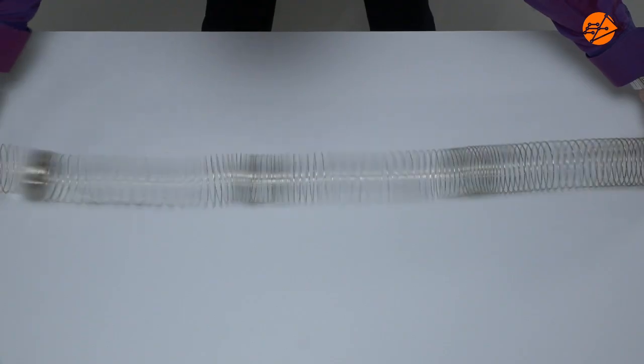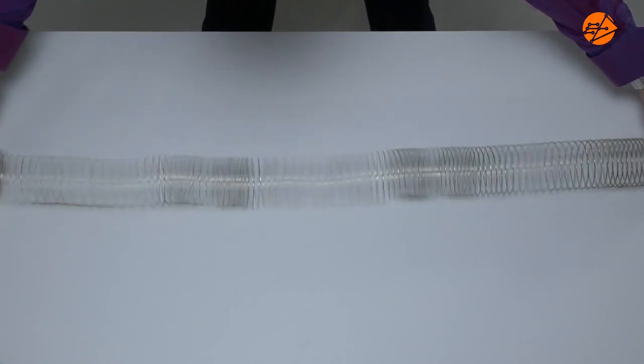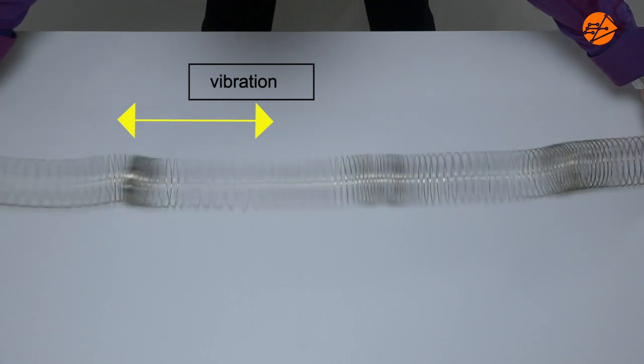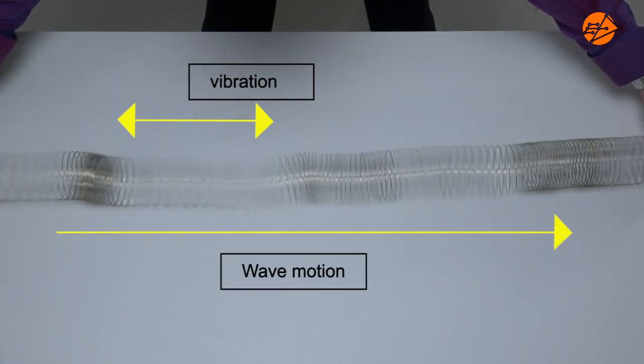Looking at this video, you can understand every particle is also vibrating with identical periodic motion, amplitude, and frequency as the vibrating force. There is also no mass transfer as the particles only vibrate about their equilibrium position, while the wave moves parallel to the direction of vibration. Hope you have a great time learning about waves. See you next time!